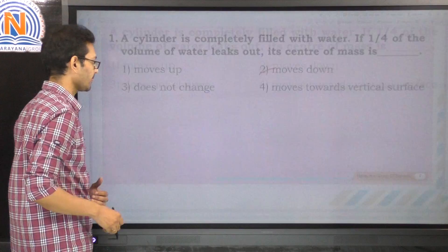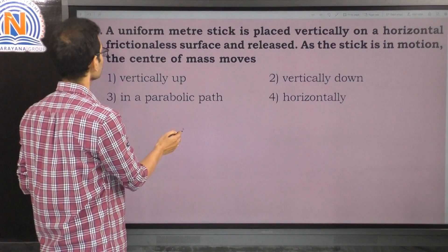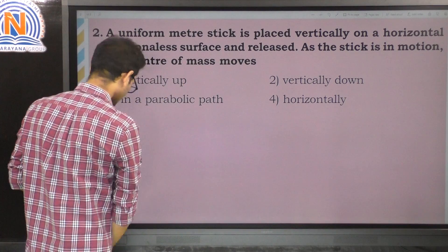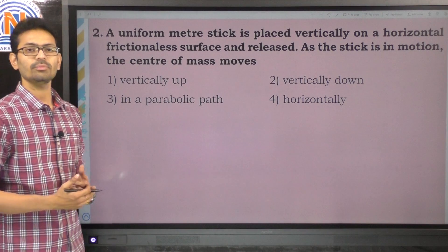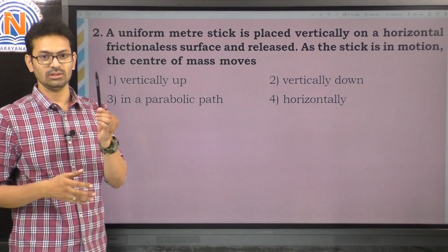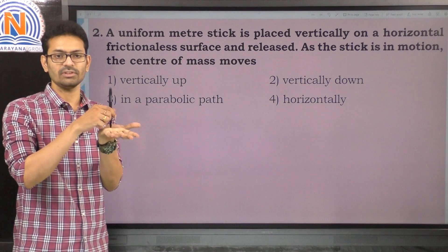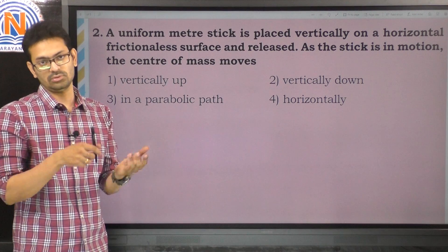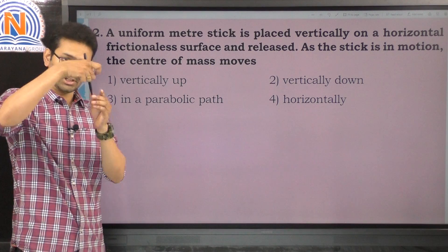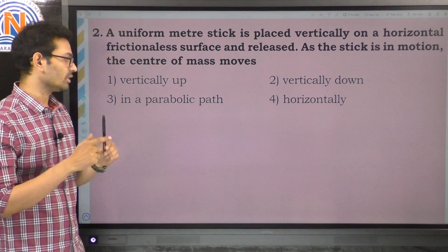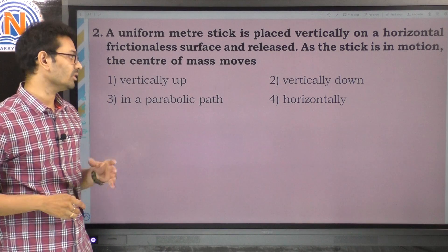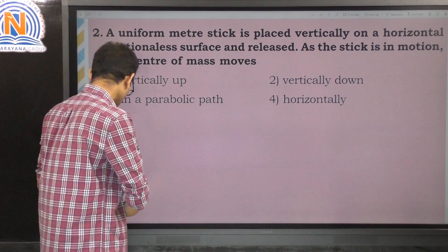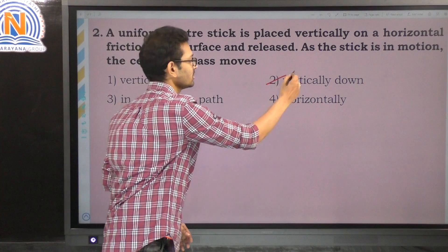The second question: a uniform meter stick is placed vertically on a horizontal frictionless surface and released. As the stick is in motion, the center of mass moves vertically downwards when it is slipping from a frictionless floor. So the center of mass moves vertically downwards, and the option is 2.